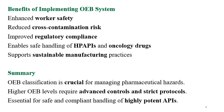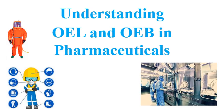In summary, OEB classification is crucial for managing pharmaceutical hazards. Higher OEB levels require advanced controls and strict protocols. It is essential for regulatory compliance and safe handling of highly potent APIs by personnel. Whenever highly potent APIs are handled, proper training for use of PPEs and for handling these chemical substances must be given to employees.